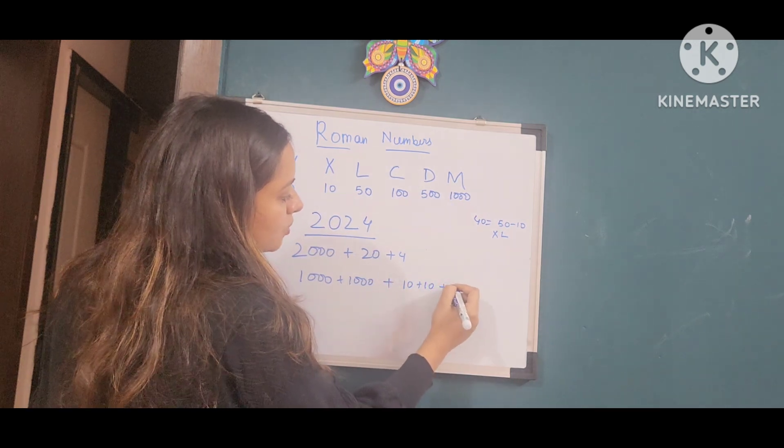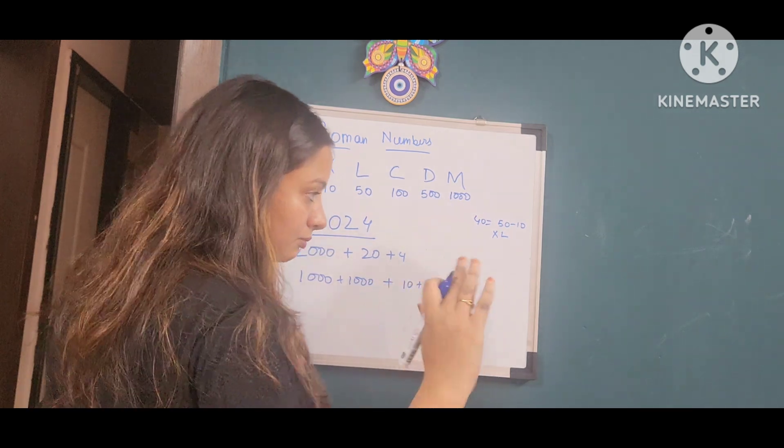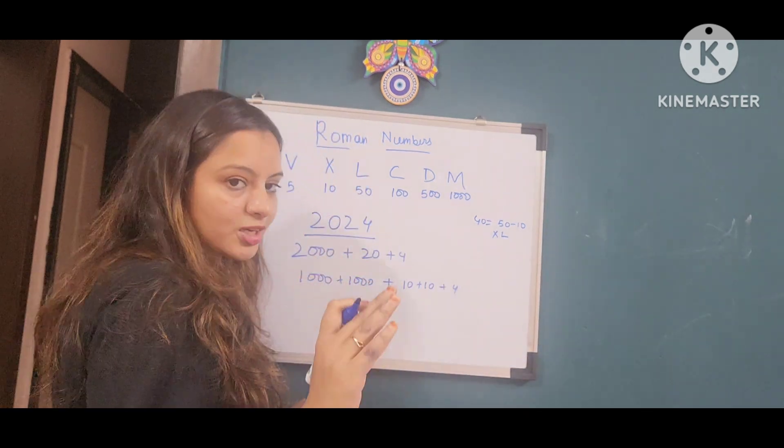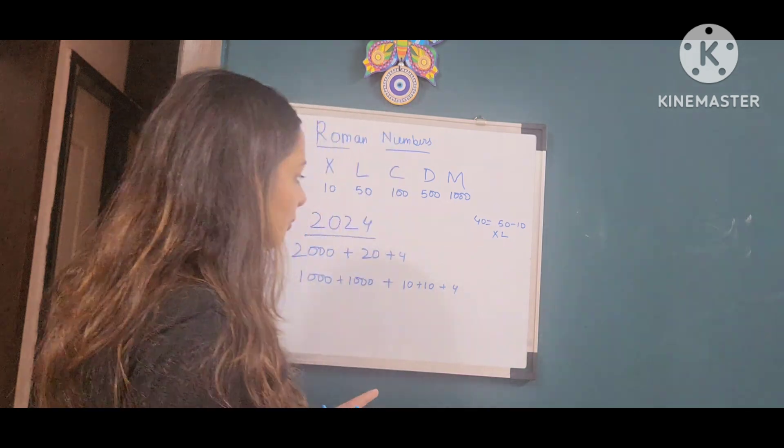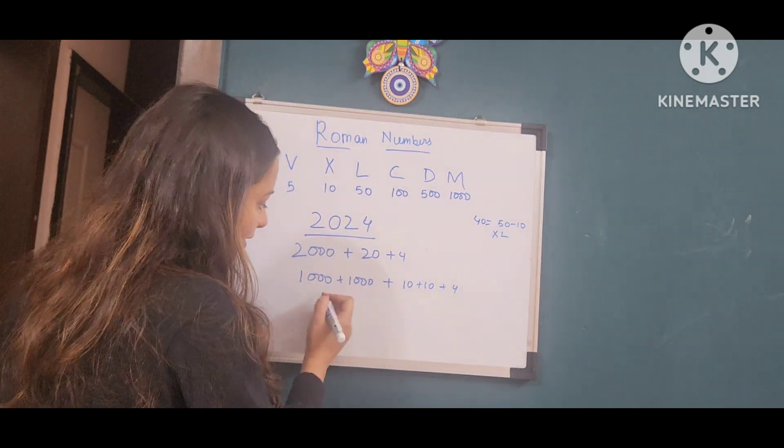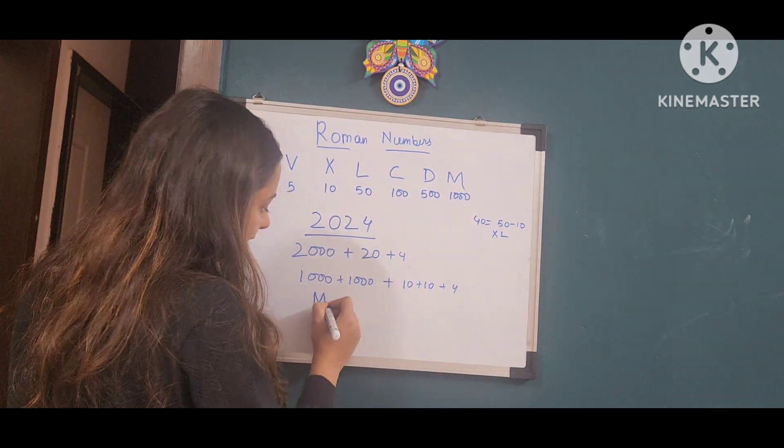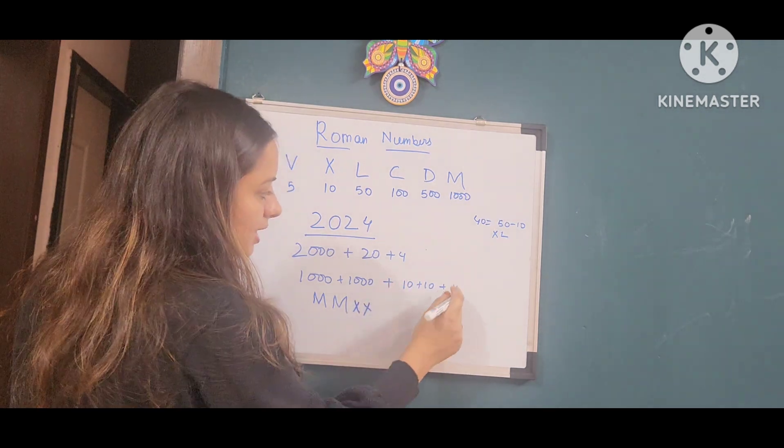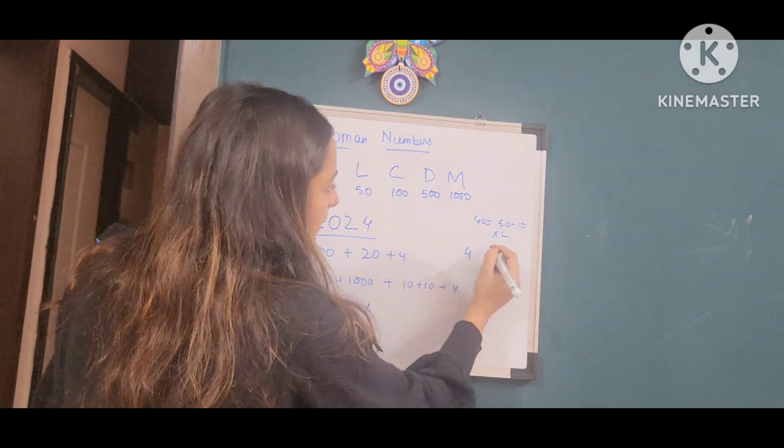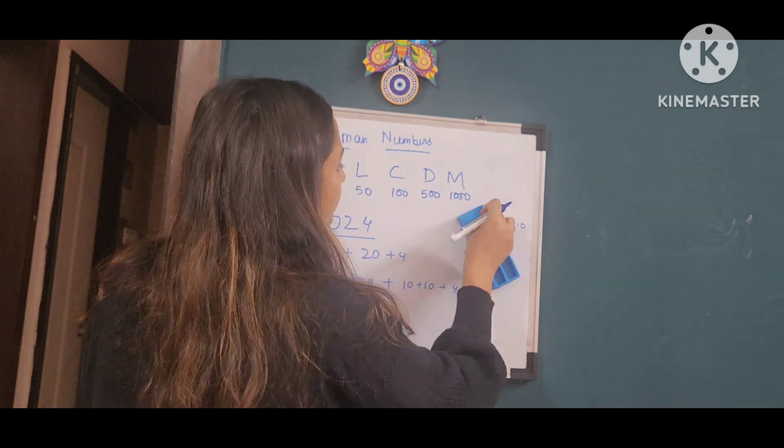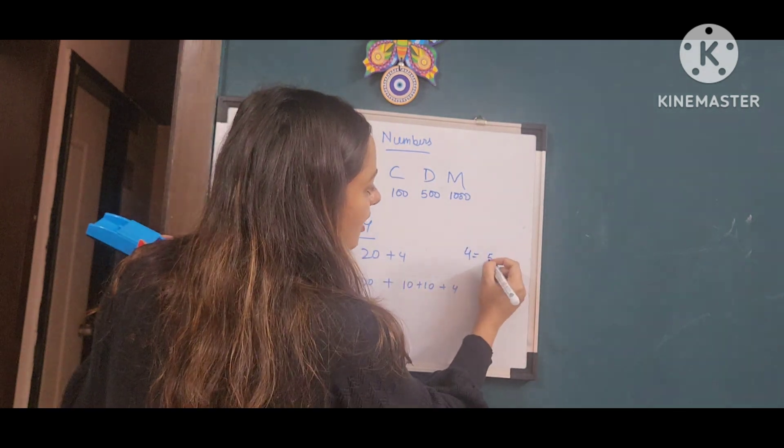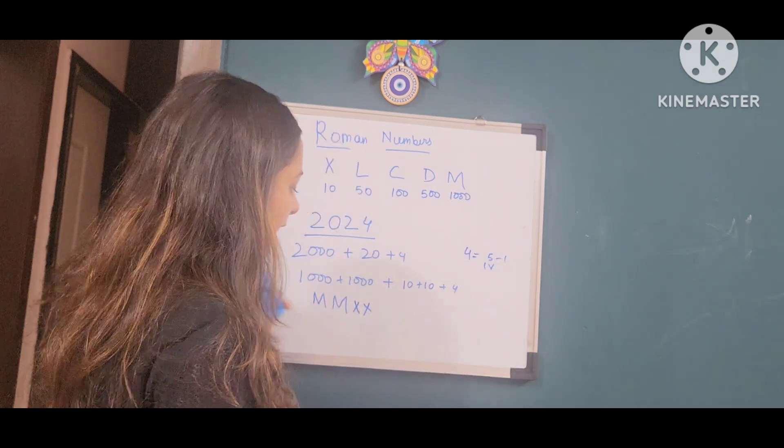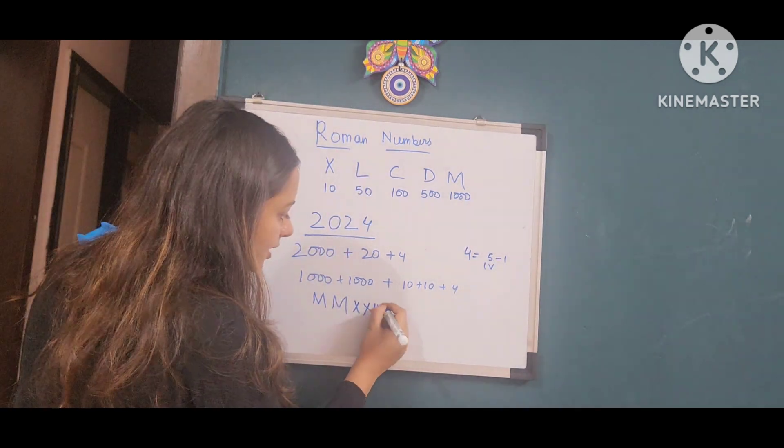And for 4, we learned the principle: we don't write 1 plus 1 plus 1 plus 1. We write it as 5 minus 1. So 1000 plus 1000 is MM. 10 plus 10 is XX. And 4 is written as IV because 4 equals 5 minus 1. 5 is V and minus 1 is written before, which is I. So IV is 4.